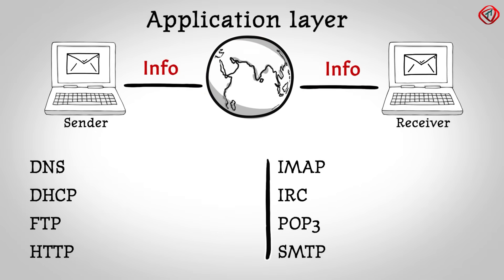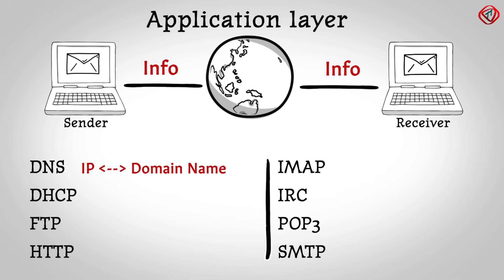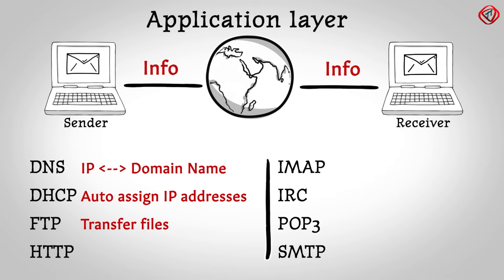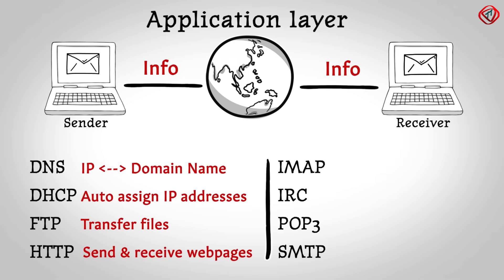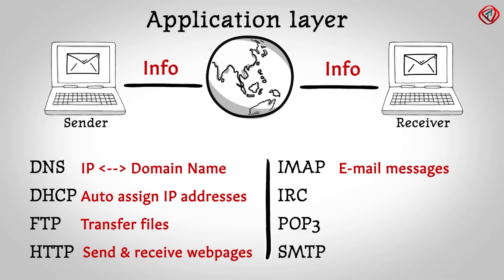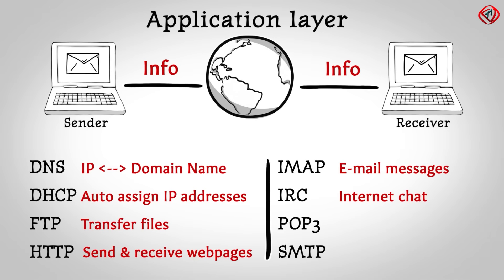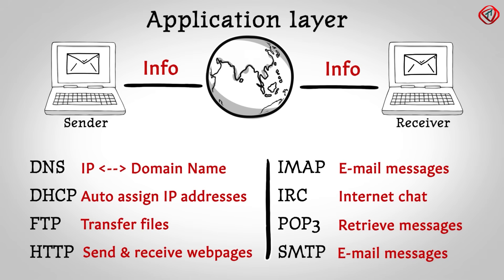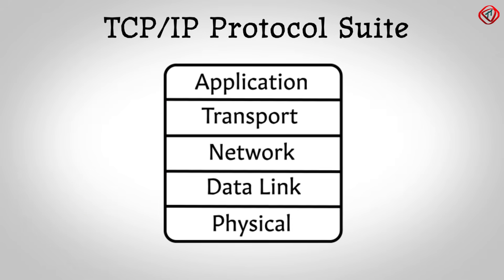This is the list of protocols provided by the application layer. Domain Name System translates IP addresses to domain names and vice versa. Dynamic Host Configuration Protocol automatically assigns IP addresses to computers present in a network. File Transfer Protocol is used to transfer files on the internet. Hyper Text Transfer Protocol is used for sending and receiving web pages. Internet Message Access Protocol is used for email messages on the internet. Internet Relay Chat Protocol is used for internet chat. Post Office Protocol version 3 is used by email clients to retrieve messages from remote servers. Simple Mail Transfer Protocol is used for email messages on the internet. These are the 5 layers in the TCP/IP protocol suite.